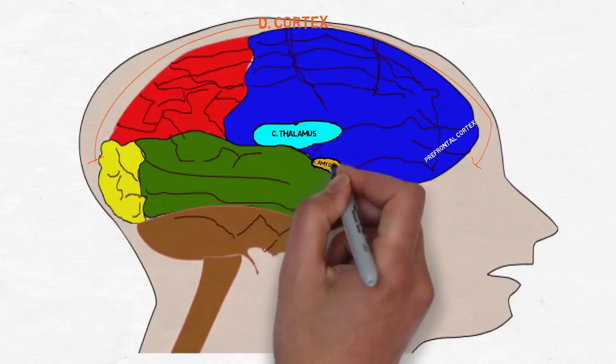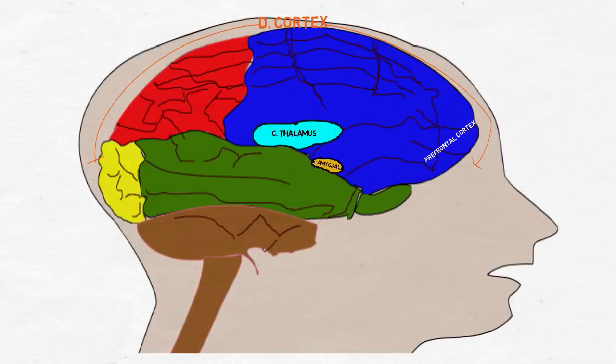The amygdala is the emotional core of the brain whose primary role is to trigger the fear response. Information passing through the amygdala is associated with an emotional significance.